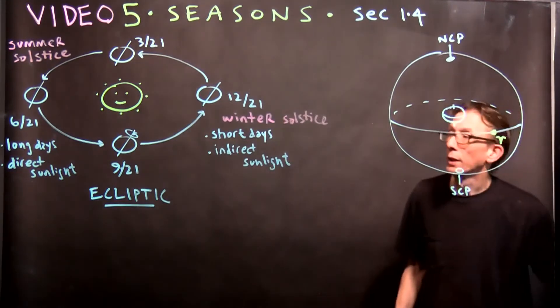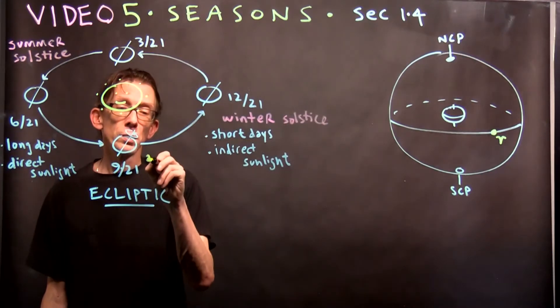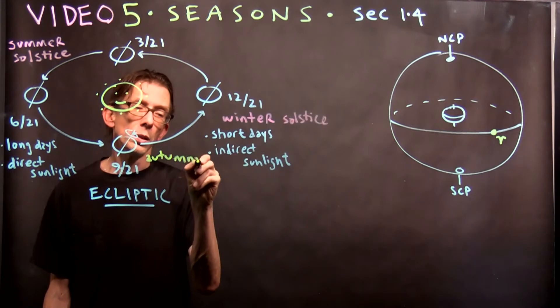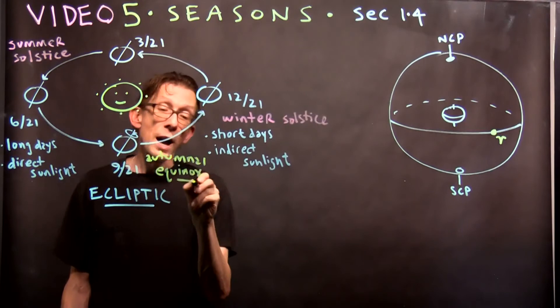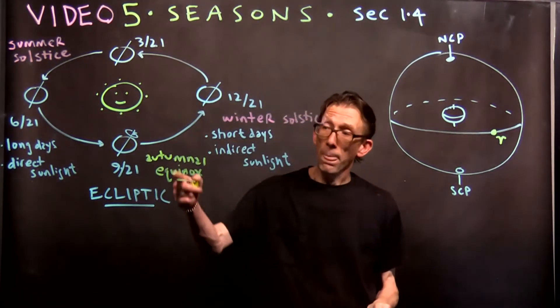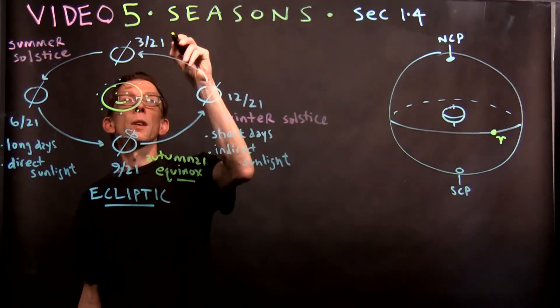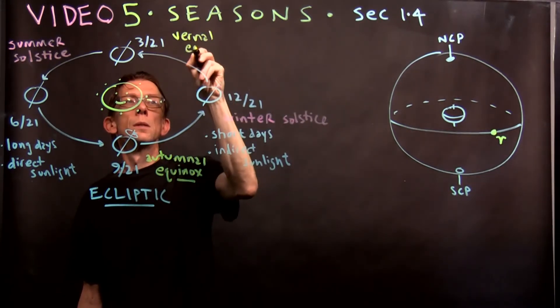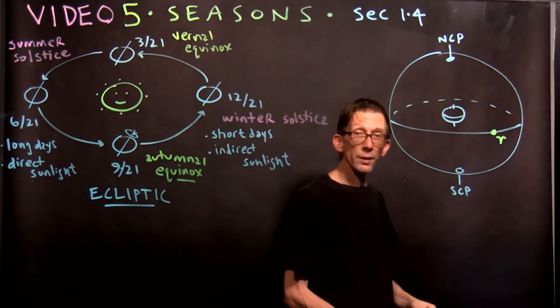And then 9/21, of course, is known as the autumnal or fall equinox. Equinox equal because we have equal length days and nights on September 21st. Up here, first day of spring, the vernal equinox. Again, equal length day and night.